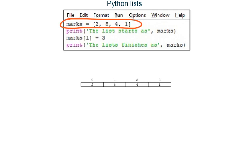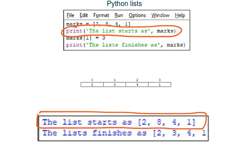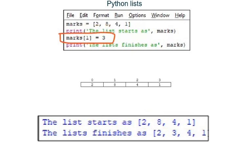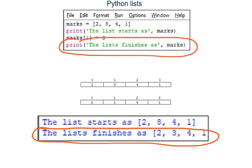This program again creates a list named marks with four elements, each storing an integer: 2, 8, 4, and 1. Line two prints out the list at the start of the program. Line three changes what is stored in element one of the list — it started as 8, but line three changes it to 3, so now we have 3 stored in element one. The final line outputs what the list looks like at the end of the program.